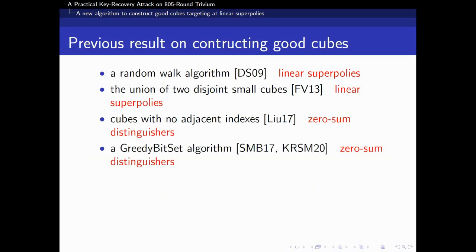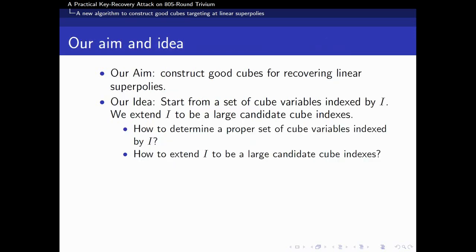Now, we are going to introduce our work. In cube attacks, finding cubes which would lead to useful superpolys is a critical but difficult task. Previously, some ideas were proposed to find or construct such cubes. In 2009, Dinur and Shamir proposed a random walk algorithm to find cubes with linear superpolys. Later, in 2013, Fouque and Vannet presented a method where two disjoint small cubes are unioned to find linear superpolys. When it comes to finding cubes leading to zero-sum distinguishers, selecting cubes with no adjacent indexes and greedy bit-set algorithm was proposed. Our aim is to construct good cubes for recovering linear superpolys. To achieve our aim, we find inspiration from greedy bit-set algorithm.